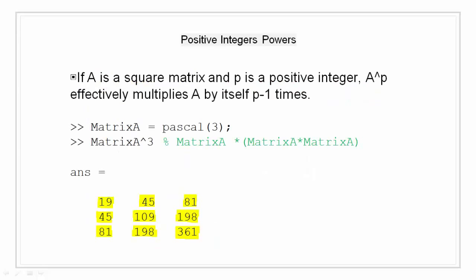Positive integer powers. If we have to do 2 squared, we multiply 2 with itself once, that is 2 times 2. Similarly, if we are powering matrix A by power of p, then we are multiplying matrix A by itself p minus 1 times.